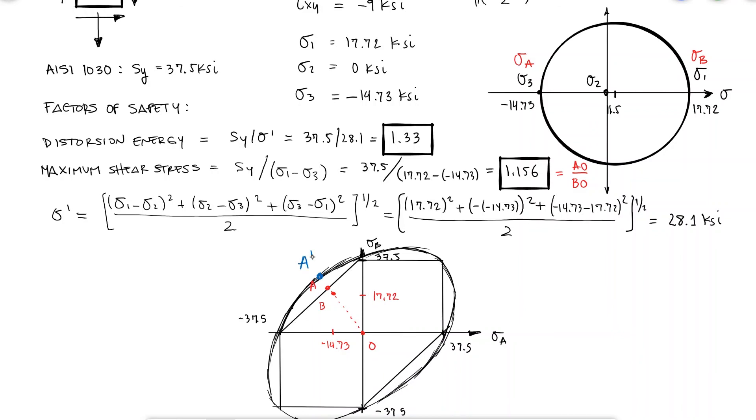so it makes sense that the factor of safety is higher since our stress state is further away from the boundary line.